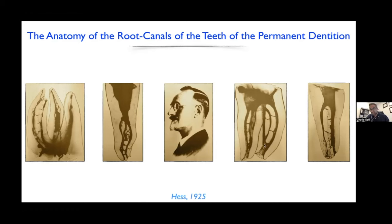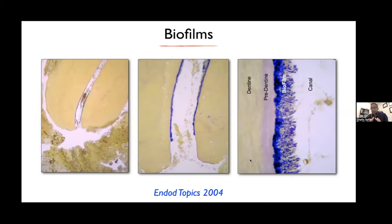Sometimes the canals open in the form of a funnel, like we see in the furcation. It's very hard to imagine this on an x-ray, but this is the kind of anatomy we are dealing with. When infected, this anatomy becomes colonized with biofilm — a very ordered community of bacteria that stick hand-by-hand to the root canal walls. It becomes an issue for us to reach these non-round areas in order to scrub and detach this biofilm to reach microbial control.